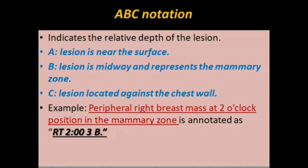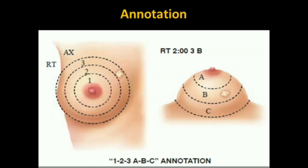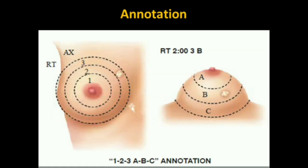3 shows the outer ring and 2 o'clock shows the position in the ring. In this slide we see two images. The first image shows the rings — the inner, middle, and outer rings — and also the axillary region. A lesion which lies posterior or in the retro-mammary zone will be labeled as X. In this image we can see a lesion that clearly lies in the outer ring at 2 o'clock, and from this image we can see the lesion is confined to the middle zone, or B. So it was labeled as a right 2 o'clock 3B lesion.